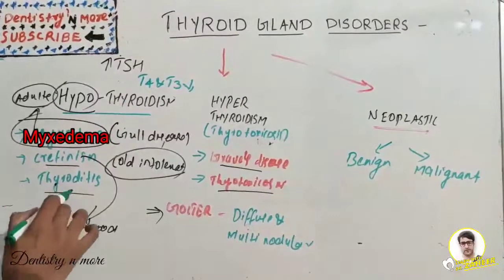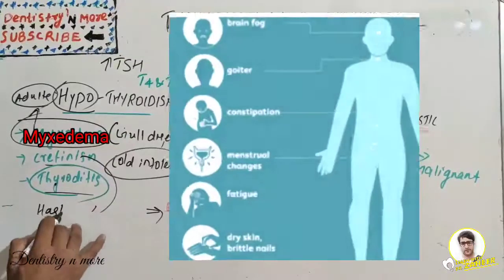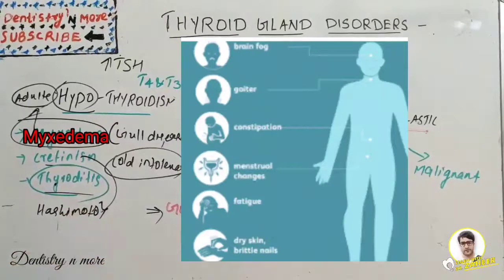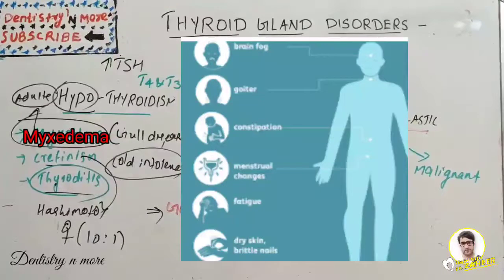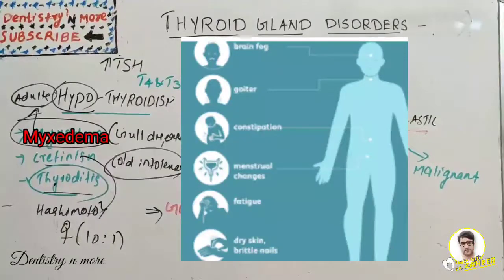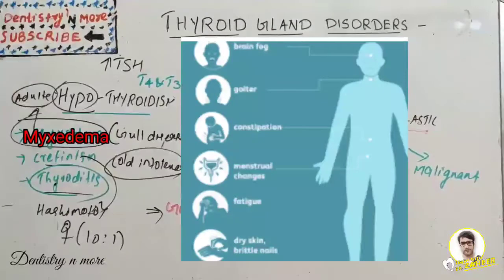Now we have thyroiditis — inflammation of the thyroid. One we already know is Hashimoto's thyroiditis, which is a gradual thyroid failure due to autoimmune destruction of the thyroid. It is mostly seen in the fifth and sixth decades of life with a female predominance of 10:1. It is a major cause of non-endemic goiter in children, and patients with Turner syndrome have high circulating anti-thyroid antibodies — our own body cells acting against our thyroid gland.